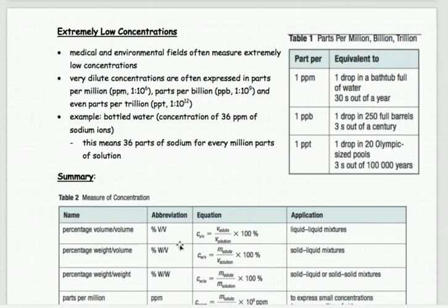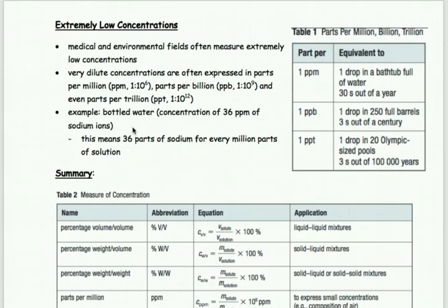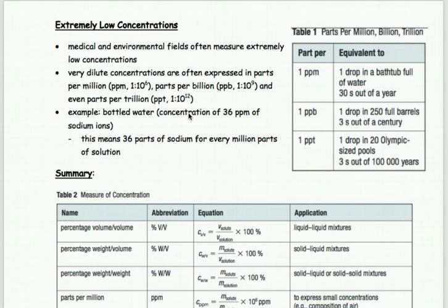Before examples, let's look at how we describe very low concentrations. Various medical and environmental fields use parts per measurements. For example, when testing air quality or water quality, we hope the concentrations are very low. We use parts per type of measurements for water — looking at slight amounts of different contaminants.